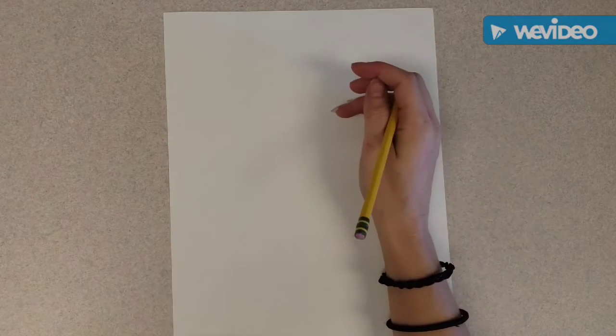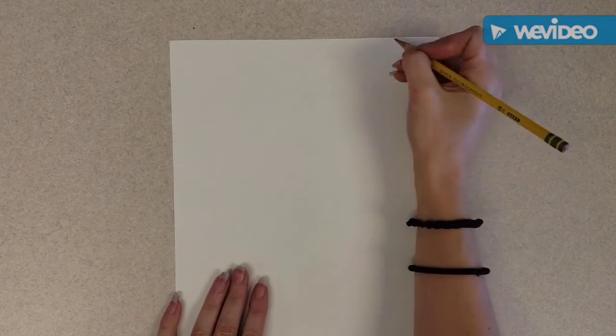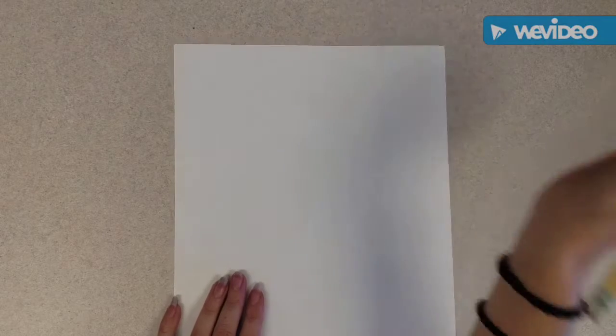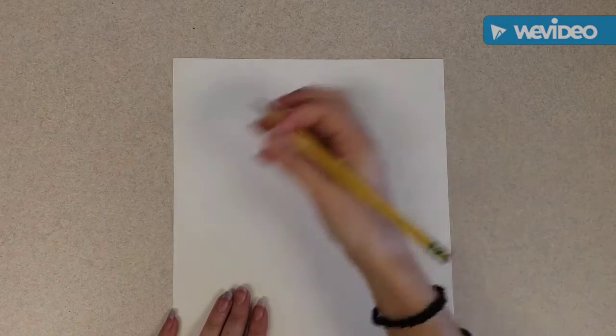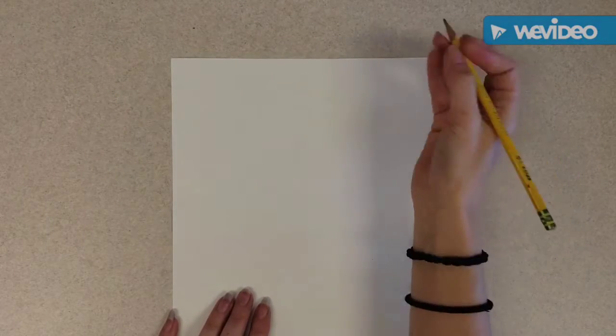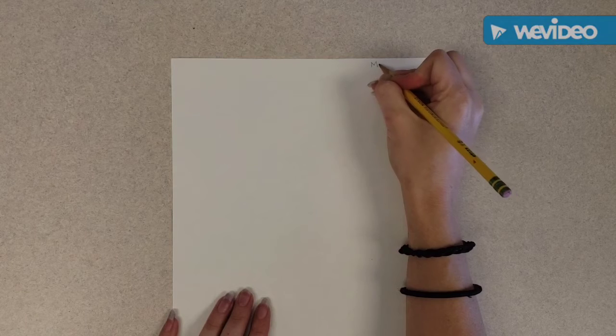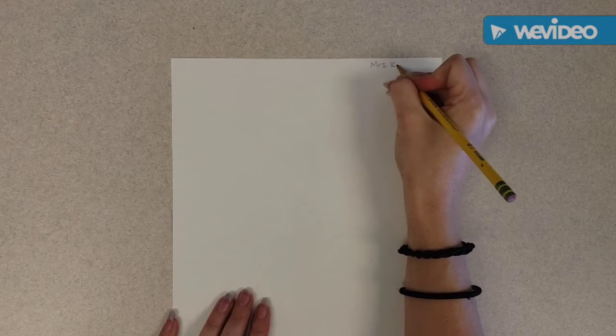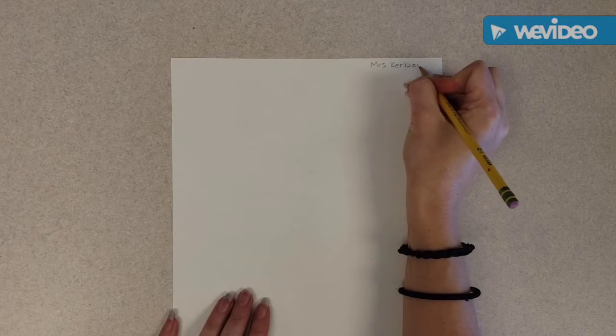So the first thing you're going to do is write your name on the back of your paper. I want you to put it somewhere in the corner. This is just in case we have to erase or use the back of our paper because we made a mistake. So we don't want our name really big in the middle because we could use the back if we mess up. So I'm going to put my name up in the corner and then just flip it when I'm done.